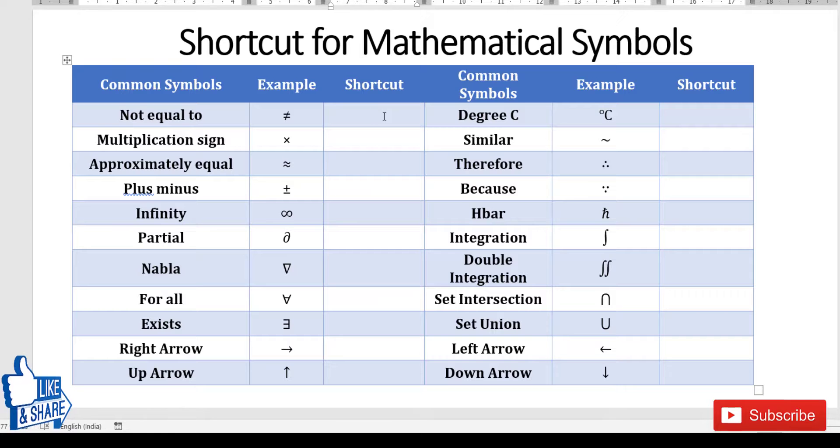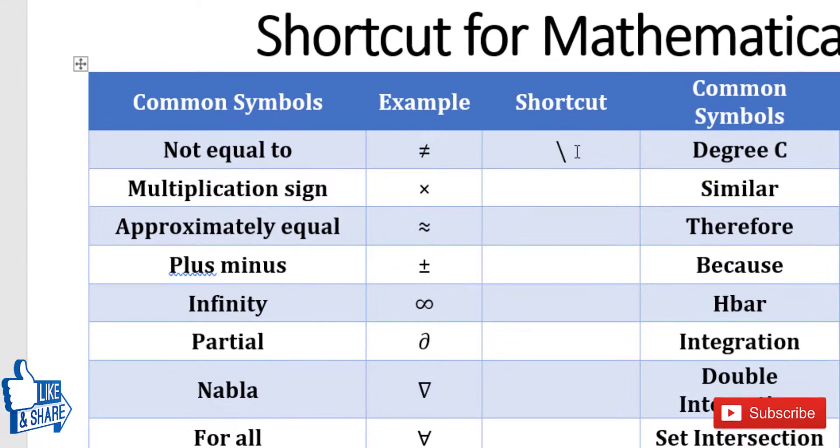But there is a smarter way to type this. For example, the shortcut for typing not equal to is just backslash E and then press space. I will be covering all the shortcuts for different symbols and show you the reference where you can get the complete list of shortcuts for all mathematical symbols.